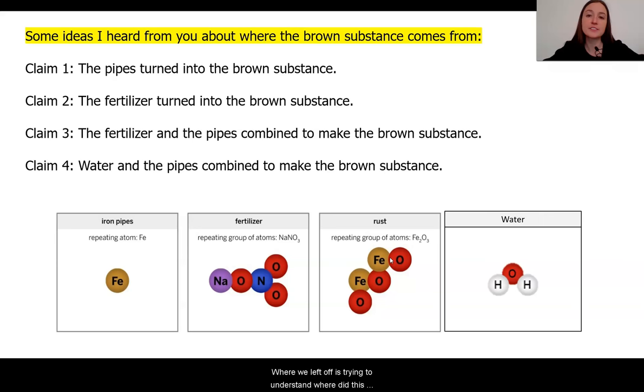So where we left off is trying to understand where did this rust come from? And here are some of the ideas that I heard from my students in their exit ticket. The first idea was that the pipes could have turned into the brown substance. So we see that there is some iron in the pipes and also in the rust. So something that students were thinking is perhaps there was a change that the pipes rusted and turned into this rust over time.